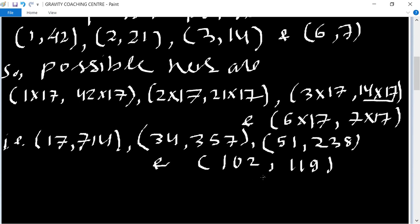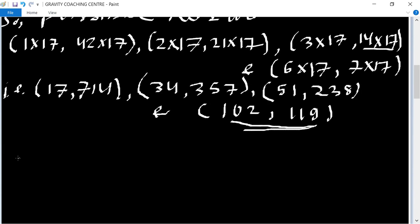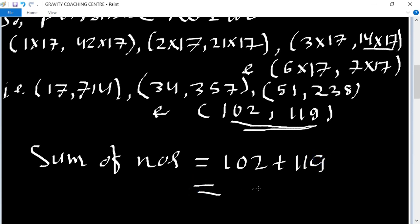According to the question, the two numbers should be three-digit numbers, so this pair satisfies. Their sum, sum of numbers is equal to 102 plus 119 equal to 221, which is the required answer.